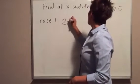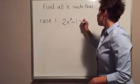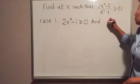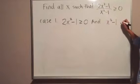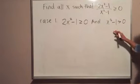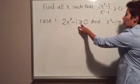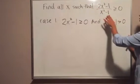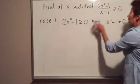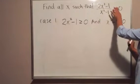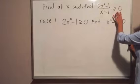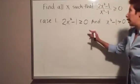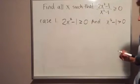So that would be that 2x² - 1 ≥ 0, and at the same time x² - 1, which is the denominator, is also positive — strictly greater than 0. Here I include the case where the numerator can be 0, but I exclude the case where the denominator can be 0. Because we have an inequality that includes equal to 0, it's alright if the numerator equals 0, and that will happen when the top is 0 and the bottom isn't.